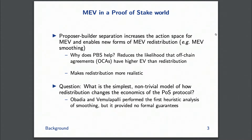Things like MEV smoothing — we called it MEV redistribution in our paper — are a lot easier to do in the Proposer-Builder-separated world. Part of the reason is that it raises the cost of off-chain agreements to avoid redistributing MEV to the rest of the stakers. You can't totally remove off-chain agreements, but the question is how redistribution changes the security properties of a proof-of-stake protocol.